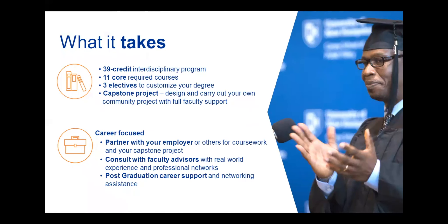The program is a 39-credit program with 11 core required courses and three required elective courses. You can take additional elective courses offered either online or in a hybrid format, meaning they start during the three weeks on campus and you complete them throughout the summer when you return home. There is a career focus — often employers support people on the job, both financially or by giving them time off, and there's a close connection with faculty advisors providing oversight and assistance on your community project.